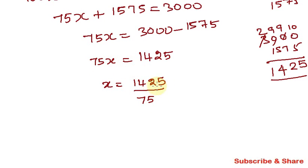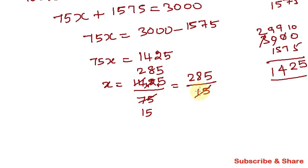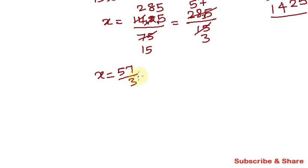So in the division, 1425 divided by 75. We cancel the 5 table: 1425 ÷ 5 = 285 and 75 ÷ 5 = 15. So now it is 285 divided by 15. Cancel again: 285 ÷ 3 = 95 and 15 ÷ 3 = 5. Wait — simplifying further: 57 divided by 3 gives 19. So x is equal to 19.